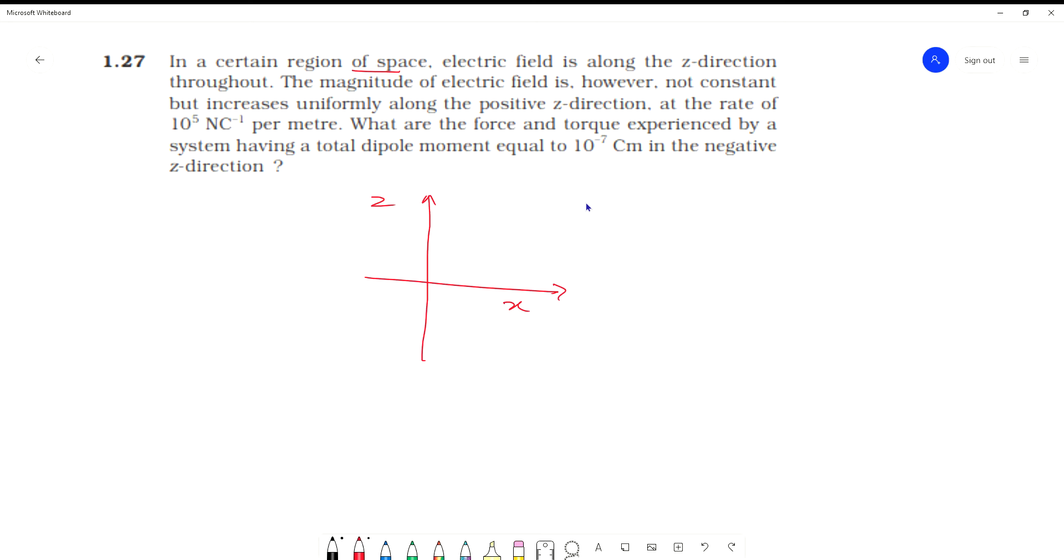The electric field increases uniformly along the positive z-direction at a rate of 10 raised to power 5 Newton per Coulomb per meter. So this is the value dE/dz, the rate of change of electric field with respect to z direction, which is 10^5 N/C per meter.